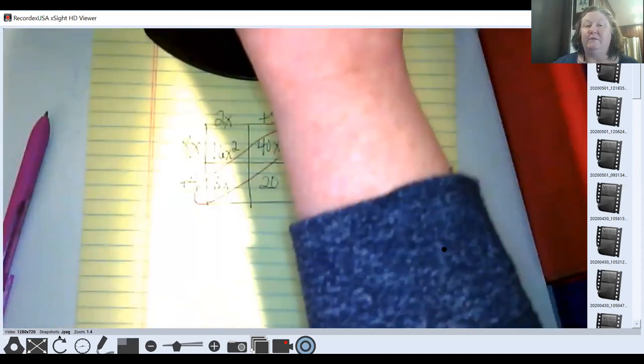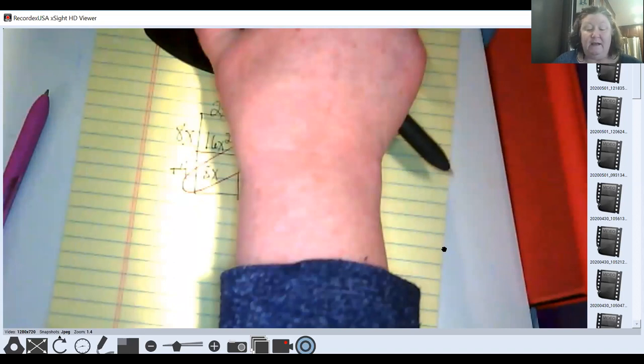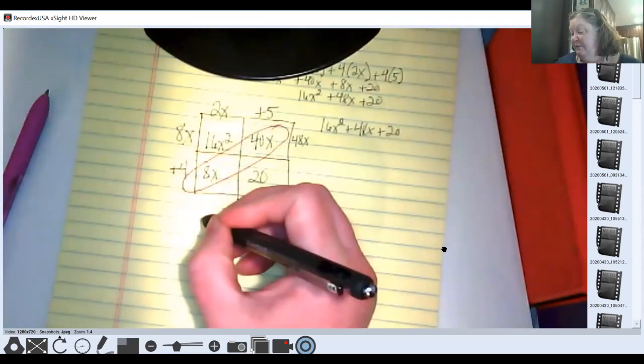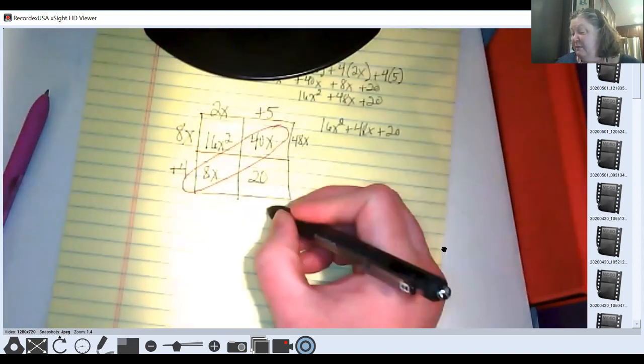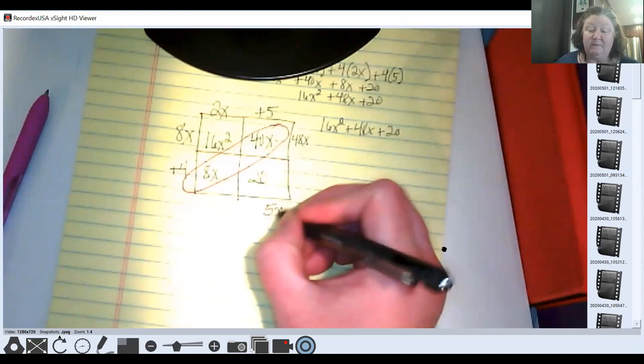I think it's really important to know this version because we're not going to be multiplying just binomials times binomials. We're going to have things like this binomial times this trinomial.